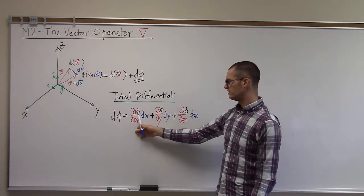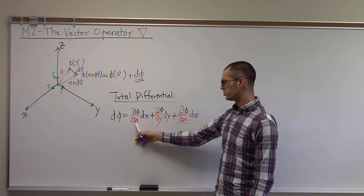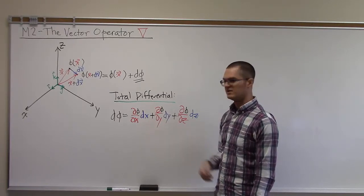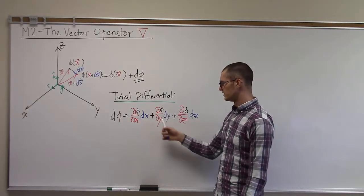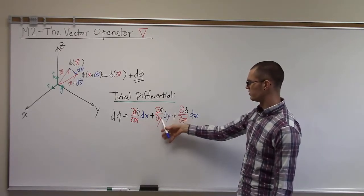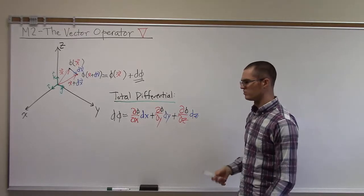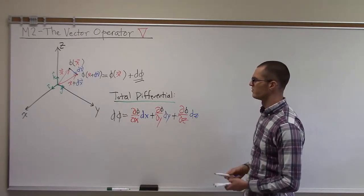So I have a small change in phi per unit change of x multiplied by the distance that we went in the x direction. Then a small change per unit y times the distance we went in the y direction. And the same for the z direction.